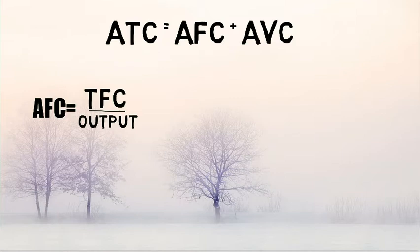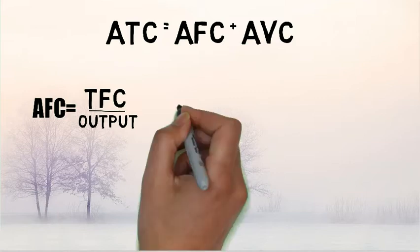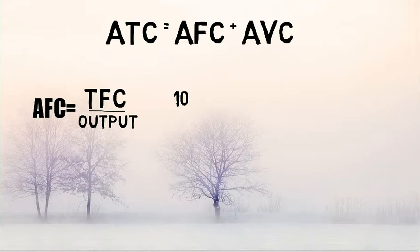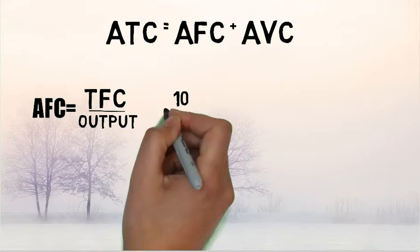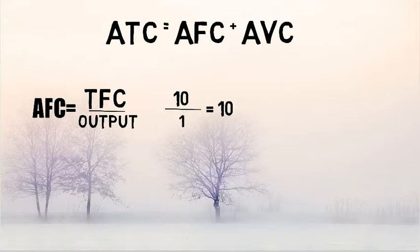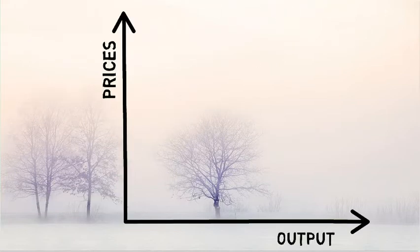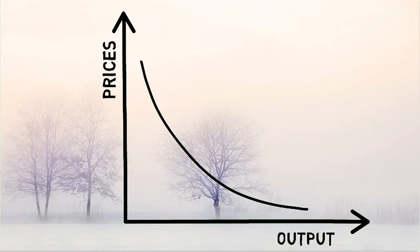You can notice an interesting thing over here. The Total Fixed Cost doesn't change, cause it's fixed. Hence, as the output increases, the Average Fixed Cost will keep on falling. And if you draw this on the graph, you get a downward sloping Average Fixed Cost curve. Notice that as output is increasing, the Average Fixed Cost is falling.